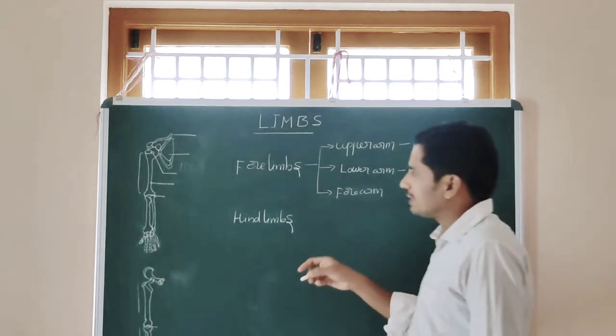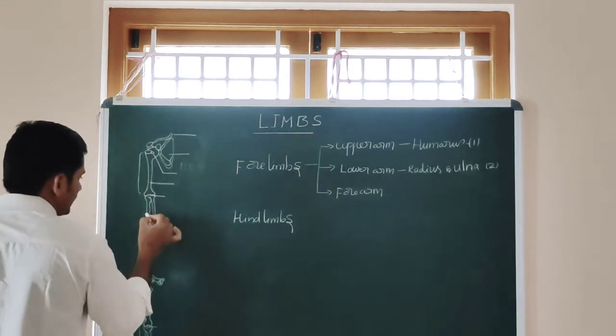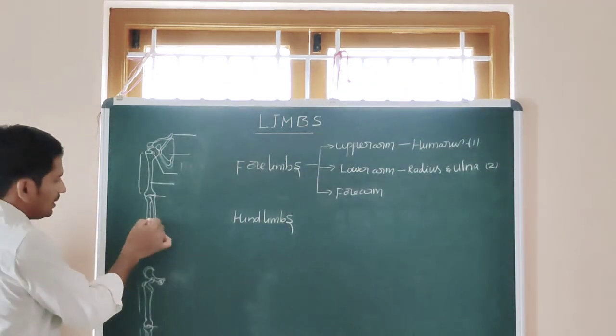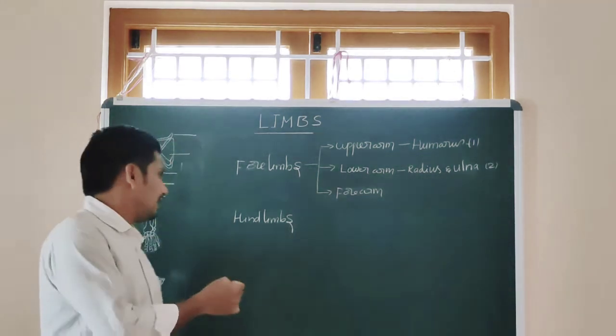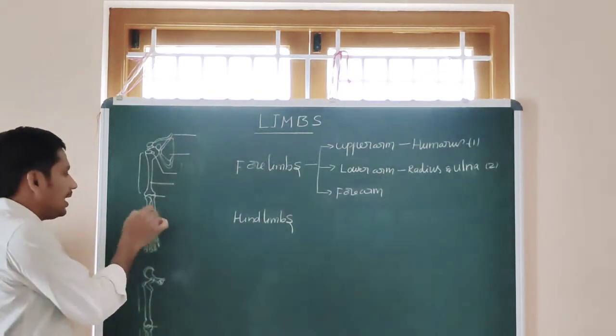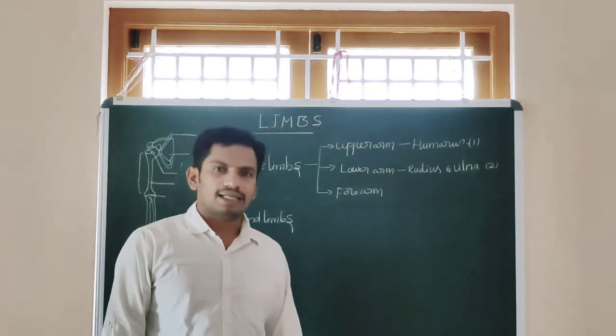Radius is on the thumb side. This is the radius with the thumb side, and this is the ulna. Radius is the thicker bone - radius is thicker than the ulna. However, ulna is longer than the radius.